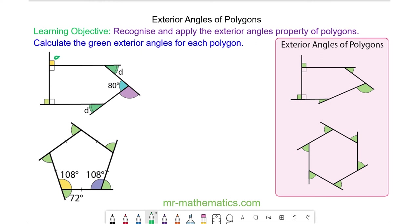Okay, so we know these two are 90 degrees each because they're marked with this symbol here. We know the purple angle must be 100 degrees because it lies along the straight line with the 80 degrees.